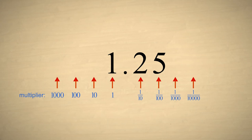If we multiply by ten again, each digit is shifted one more column to the left.